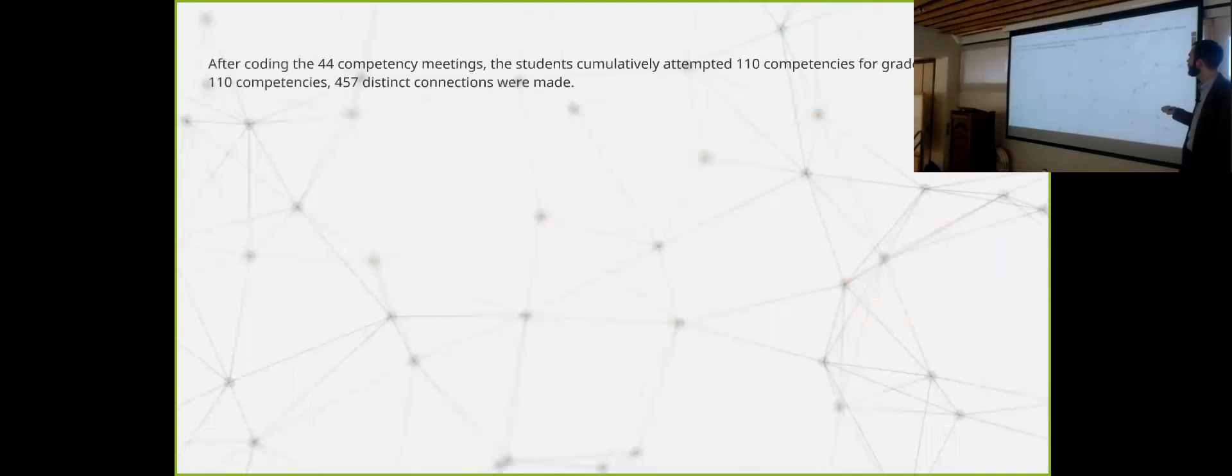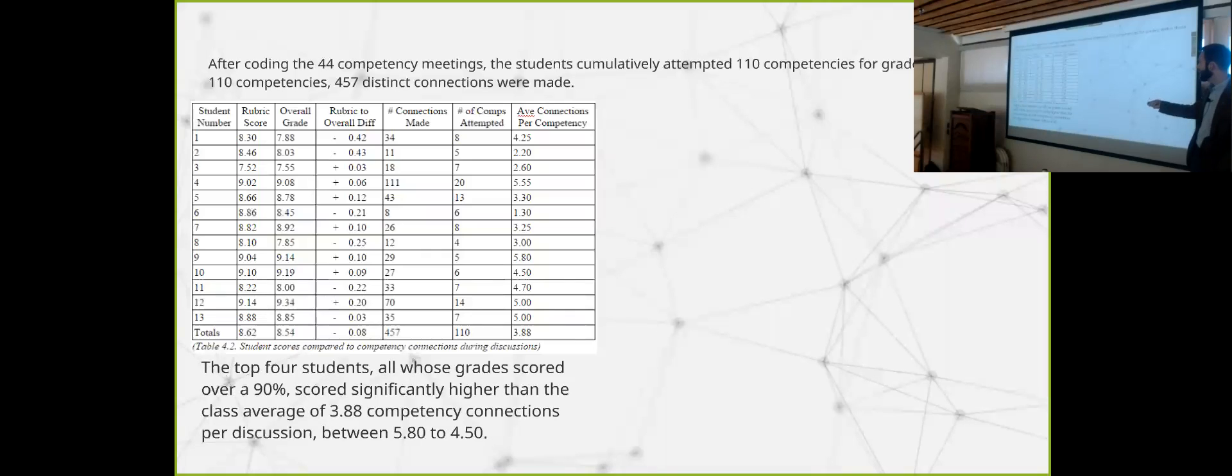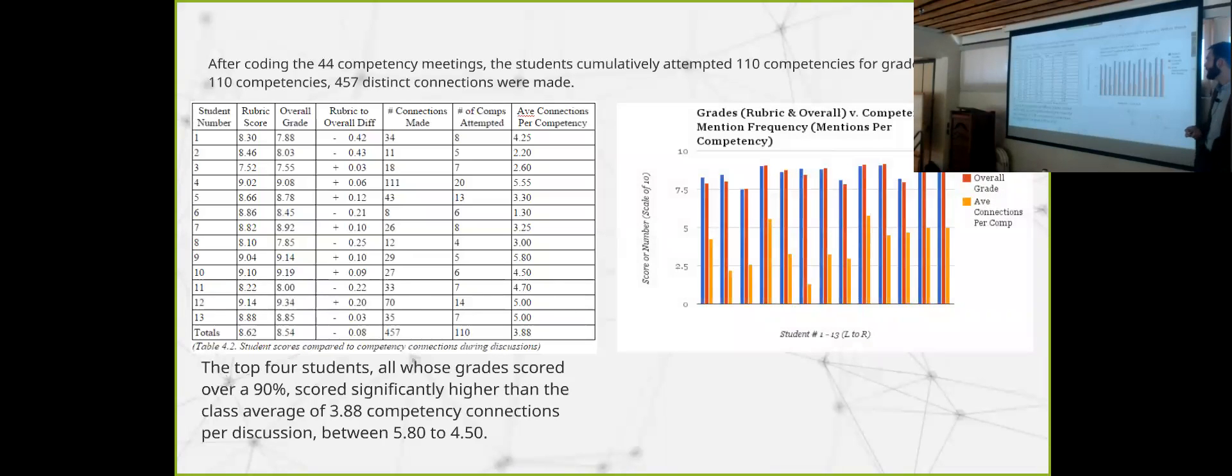Okay, my time is running out. So I did 66 meetings with them. I only coded 44 because transcribing is expensive. Forewarning, future cohorts. But I got at least two from each student. And so of the 44 I did, there was 110 competencies attempted, 457 distinct connections were made. I'm just going to go through this data chart. Basically, what happened is that the students who scored higher, the highest, over 90%, they had a tendency for 5.8 to 4.5 connections per competency, whereas the average is 3.88. And here is basically the comparison. This is more or less the visual of the chart.